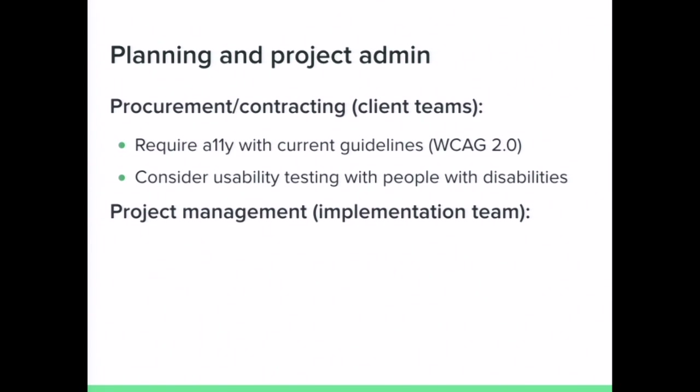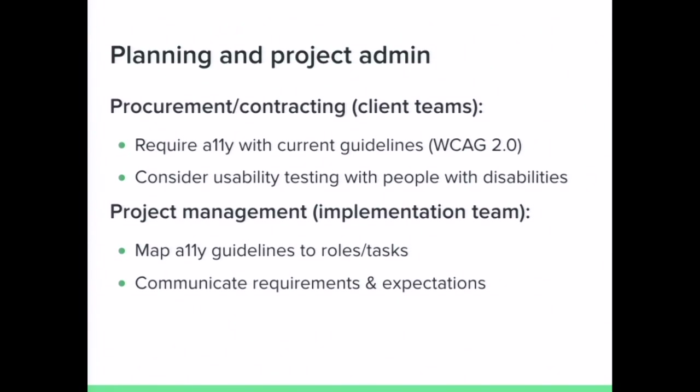On the vendor side, on the project management team, you want to map the accessibility guidelines to the tasks your team members are going to be undertaking. Communicate regularly — not just at the beginning of the project, but throughout, checking in and asking how you're covering accessibility. Don't just assume your team has it covered. Establish a test plan, formal or informal, and test for accessibility at regular intervals as you go through the design and development process. Represent accessibility at every stand-up and every project check-in.